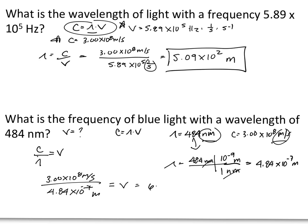That gives us 6.20 × 10¹⁴. Units-wise, our meters cancel. I'm left with inverse seconds, which is the same as hertz. That is our final answer for the frequency of the blue light.